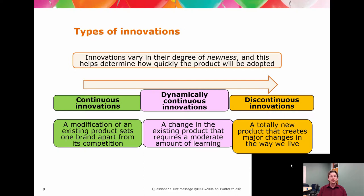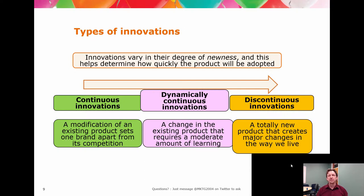The dynamically continuous innovation is one where the change is sufficiently different that you have to learn something new, buy a new part, use new software, or buy a new power cable — but it's not so new that it throws out everything you knew previously. The jump in iPhones from 4 to 5, which changed the power supplies, is a good example. We already knew how to charge a phone and use an iPhone, but now we needed to replace all our existing plugs, power cables, and equipment that relied on the old format. That made it dynamically continuous.